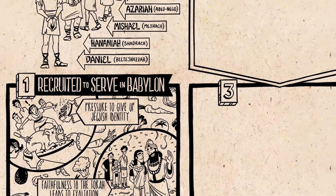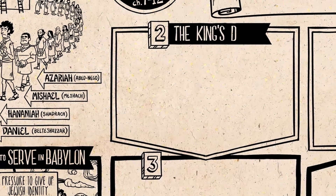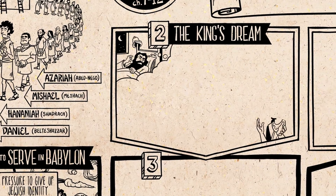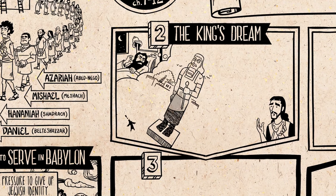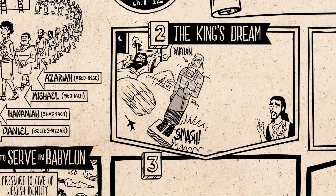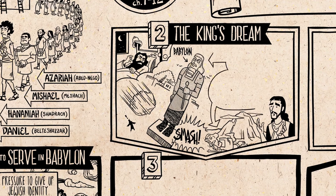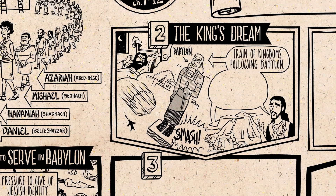After this begins the Aramaic section, which has a really cool symmetrical design. The king of Babylon has a dream that, it turns out, only Daniel is able to interpret. It's about a huge statue made of four types of metal, and it symbolizes a sequence of kingdoms — the head is Babylon. But then a huge rock comes flying in, shatters the statue, and becomes a huge mountain. Daniel says that the statue represents a train of human kingdoms following from Babylon, and they will all fill God's world with violence. But one day, God's kingdom will come and will confront and humble the arrogant kingdoms of this world, and fill the world with the healing justice of God's reign and rule.